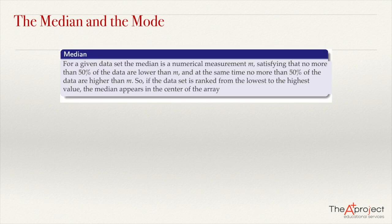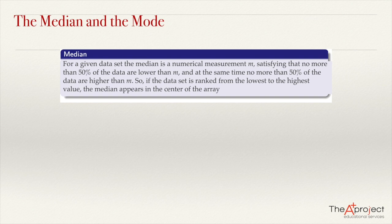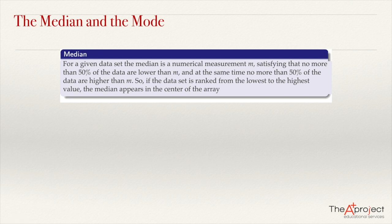The median is a numerical measurement that we can symbolize with M. It satisfies the following: no more than 50% of the data are lower than M, and at the same time, no more than 50% of the data are higher than M. So this is the data that is in the center. If we rank from the lowest to the highest value, the median appears in the center of the array.